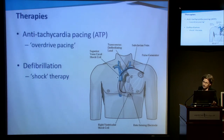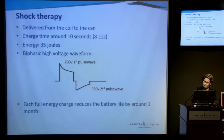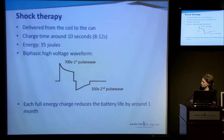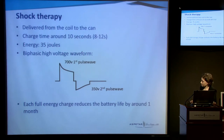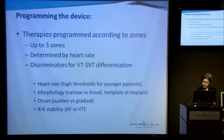The second type of therapy is a shock. The shock is delivered from the coil in the right ventricle, with the depolarization wave travelling to the device — the CAN — at the top. Charge time when the device is brand new is about eight seconds; as it gets older it increases to about 12 seconds at end of life. Most devices now we just program to use high energy — straight in with a 35-joule biphasic high voltage waveform — to give the best safety margin. Every time the device is fully charged or the patient receives a shock, it reduces battery life by around one month.